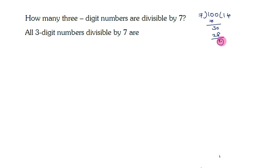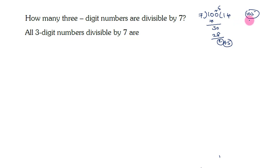That means if we add 5 to 100, then 105 is exactly divisible by 7. So 105 is the least three-digit number which is divisible by 7.